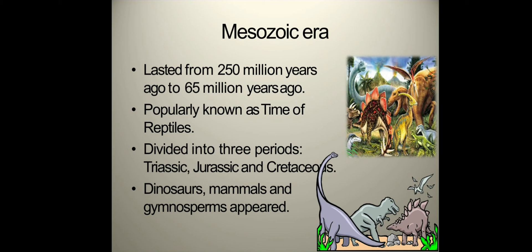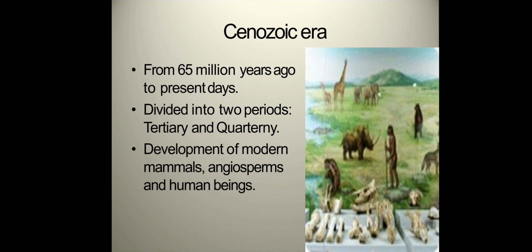Next, the Mesozoic era lasted from 250 million years ago to 65 million years ago, popularly known as the Time of Reptiles. It is divided into three periods: Triassic, Jurassic, and Cretaceous. During this era, dinosaurs, mammals, and gymnosperms appeared.